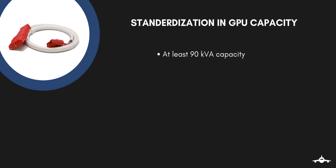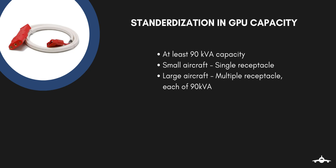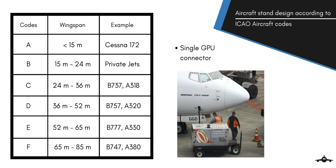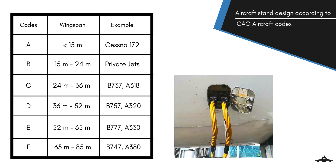There are certain standardizations in GPU capacity. All commercial aircraft require GPUs of at least 90 kVA capacity. Smaller aircraft have a single receptacle with just one cable, whereas large aircraft have multiple receptacles in which multiple cables of 90 kVA each are plugged in. The GPU plug-in adapters or connectors are also standardized to fit all aircraft. Recalling the classification of aircraft by ICAO aircraft codes, Code C and D aircraft require a single cable connector of 90 kVA — that is, a single GPU with a single cable.